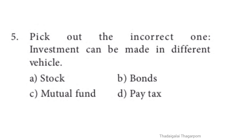Question 5: Pick out the incorrect one. Investment can be made in different vehicles: A. Stock, B. Bonds, C. Mutual fund, D. Pay tax. The correct answer is D option: Pay tax.